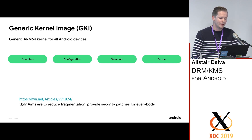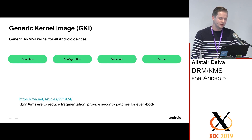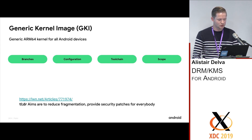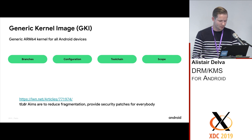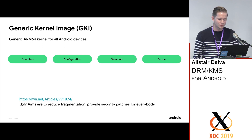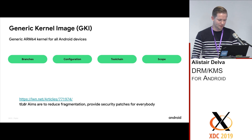So along comes Generic Kernel Image (GKI), which our team has been discussing publicly since Plumbers last year. The idea is Android would come up with a distro-style kernel, providing a kernel binary called GKI for Android devices. This image would be used for testing and validation. If you build an Android product, you would install the GKI kernel before running VTS and CTS, and the compliance results would be obtained running on top of this kernel rather than the kernel you were planning to ship your product with.